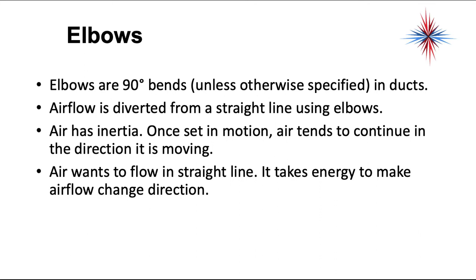We want to talk about elbows first because elbows are 90 degree bends in ducts. Airflow is diverted from a straight line using elbows. Air has inertia. Once air is set in motion, air continues in a straight line. Air wants to flow in a straight line. It takes energy to make airflow change direction.